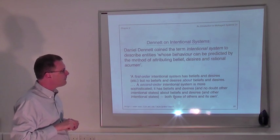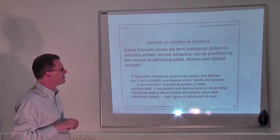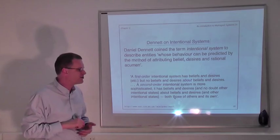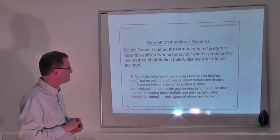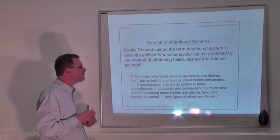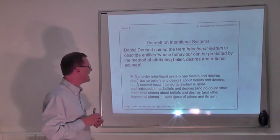And he's a philosopher who coined the term intentional system to describe entities whose behaviour can be predicted by the method of attributing beliefs, desires and rational acumen, as we did with that statement about Janine on the previous slide. And he talks about different grades of intentional systems.